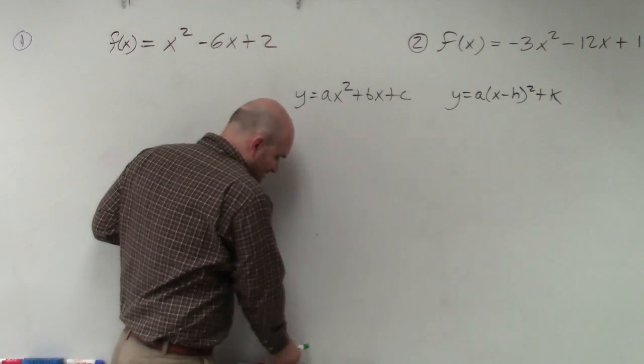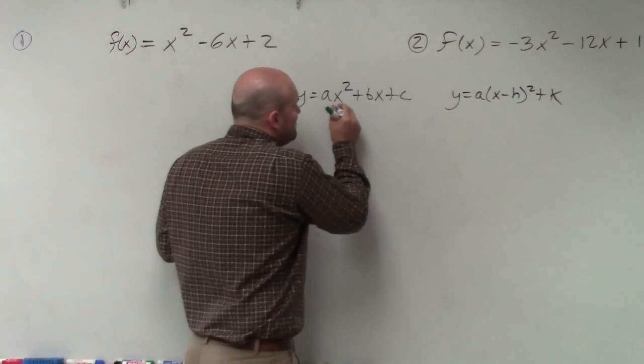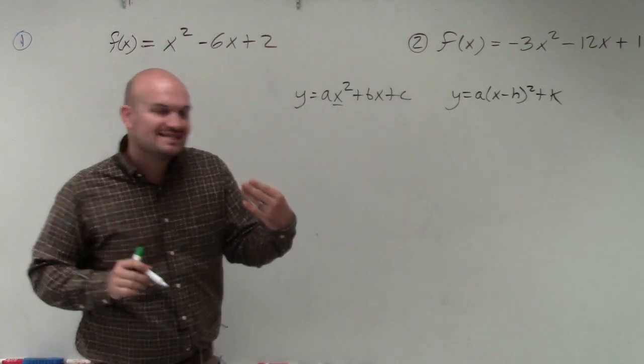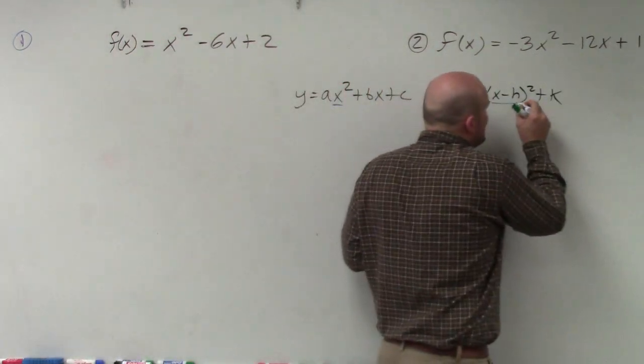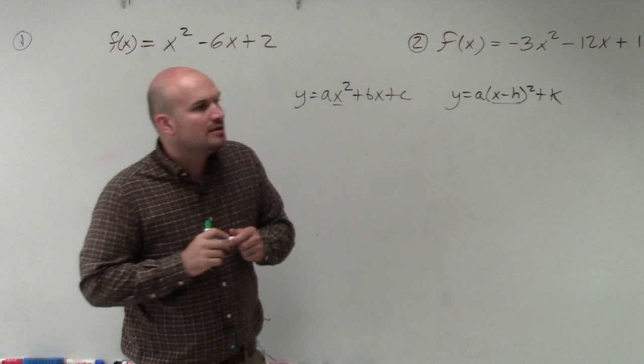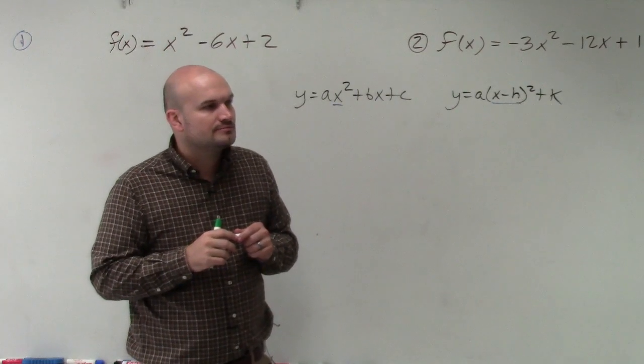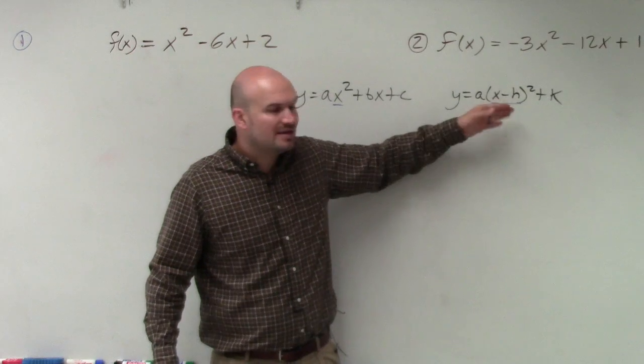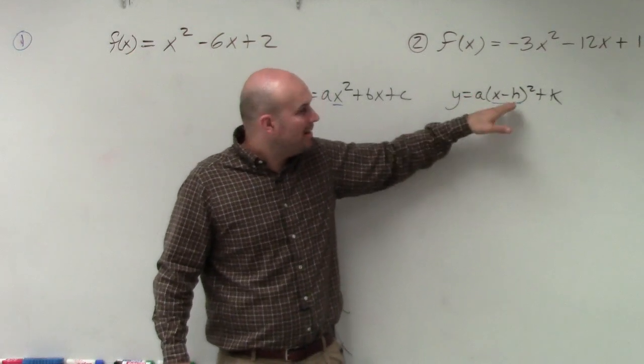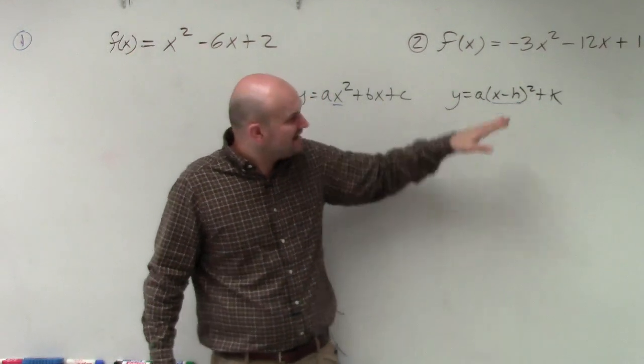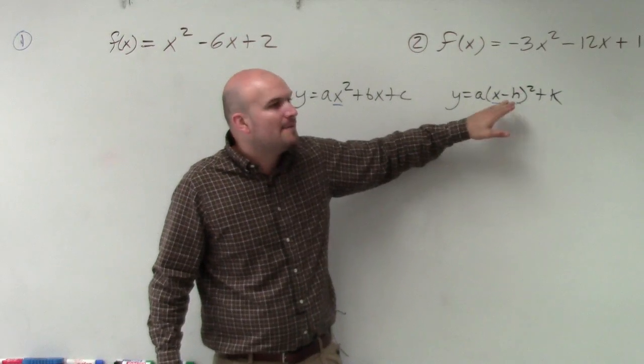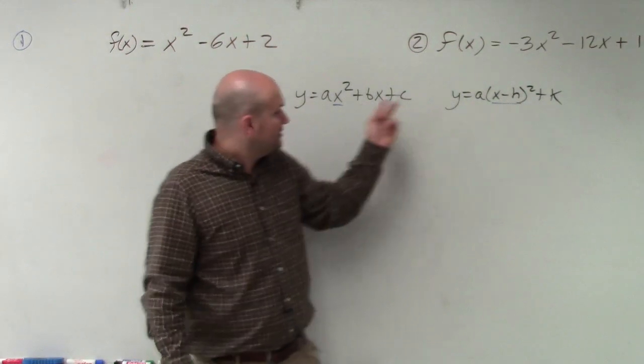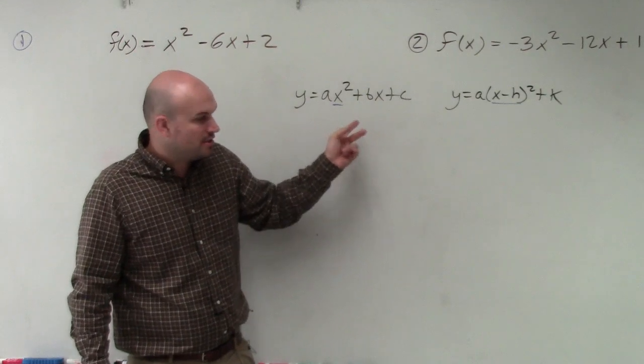Here, I just have x being squared. Whereas here, I have x minus h is being squared. They're still going to result when you expand them in having x squareds. But the important thing I want you to understand is this is what we call a binomial squared. This is just a monomial squared, or a term.